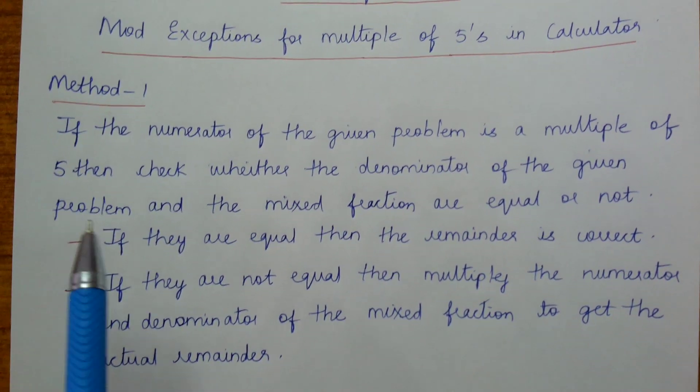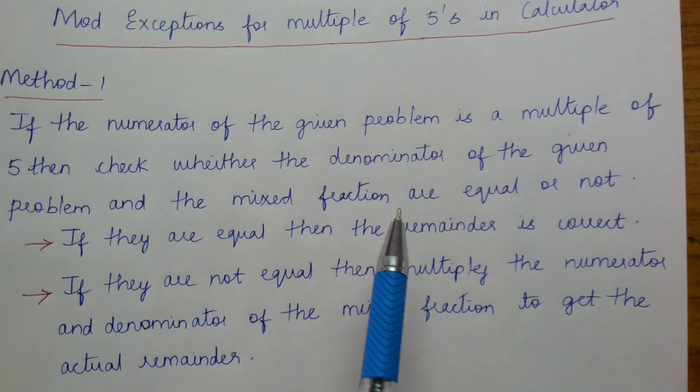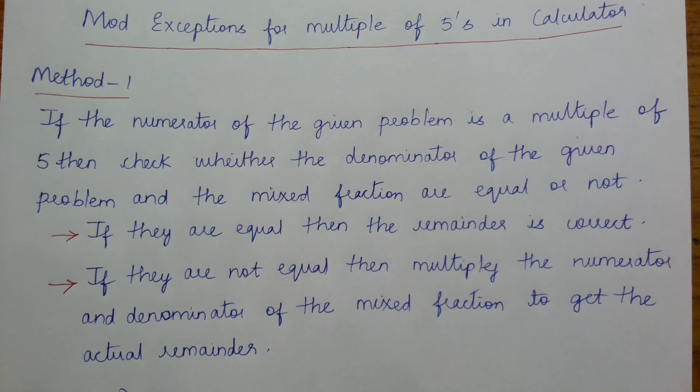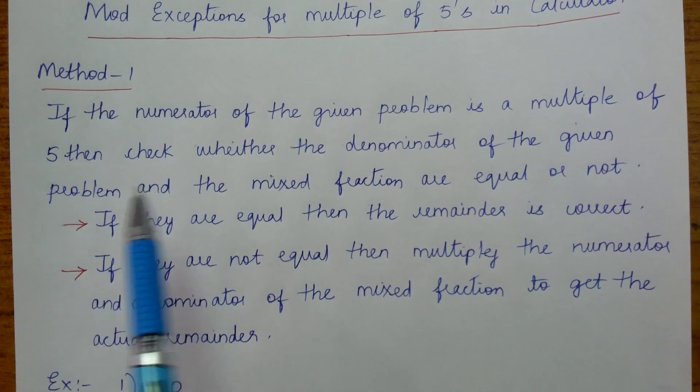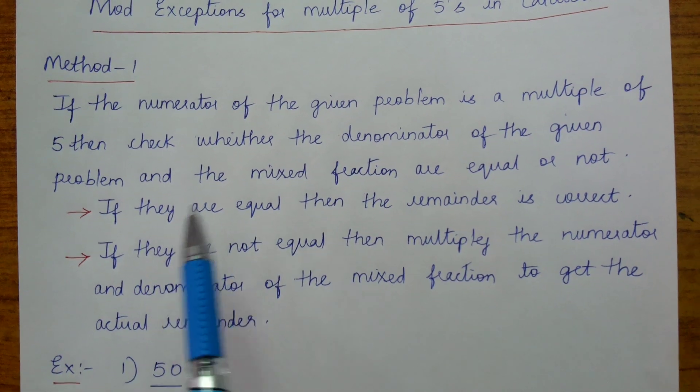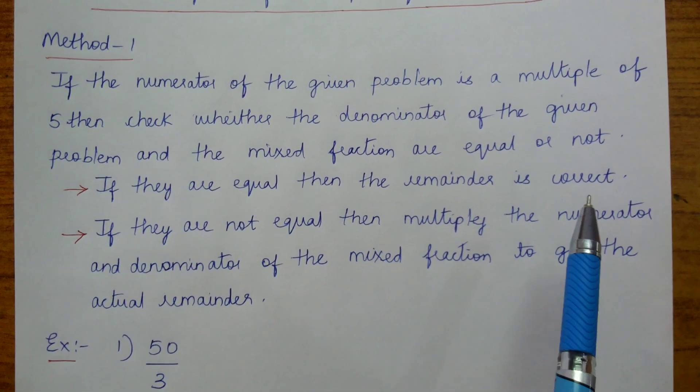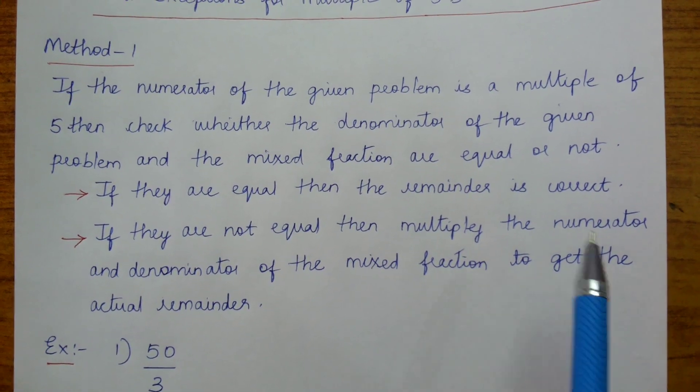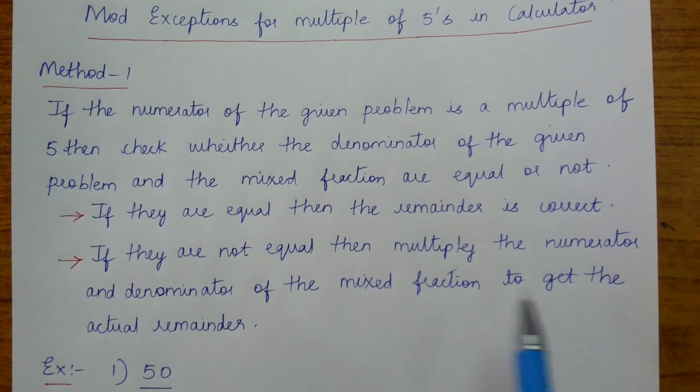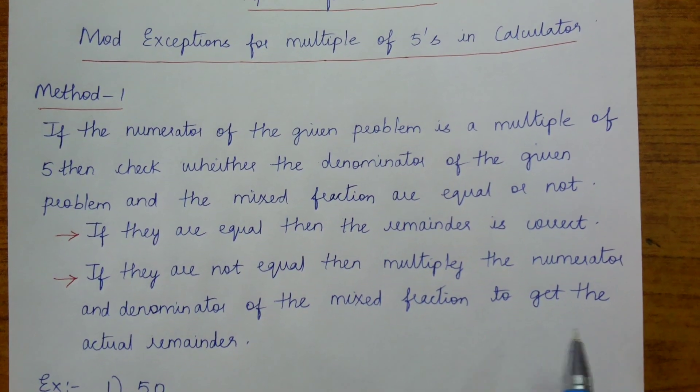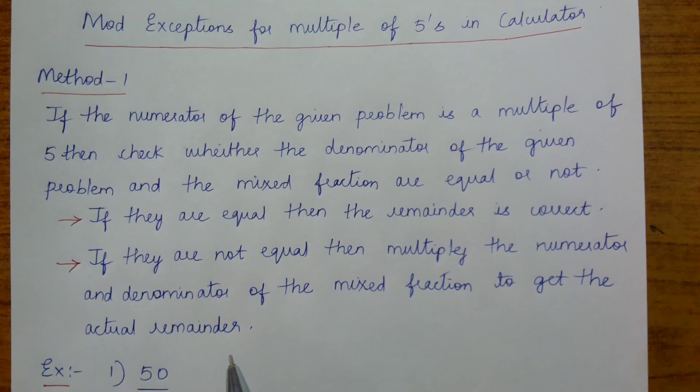So first I am going to tell you the method. If the numerator of the given problem is a multiple of 5, then check whether the denominator of the given problem and the mixed fraction are equal or not. If they are equal, then the remainder is correct. If they are not equal, then multiply the numerator and denominator of the mixed fraction to get the actual remainder.